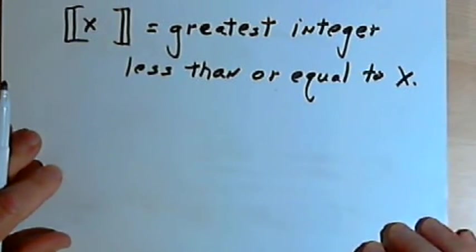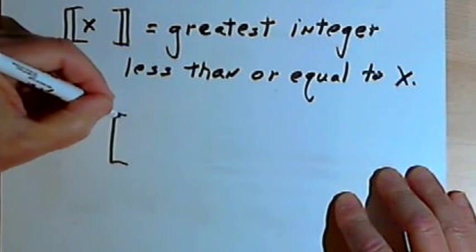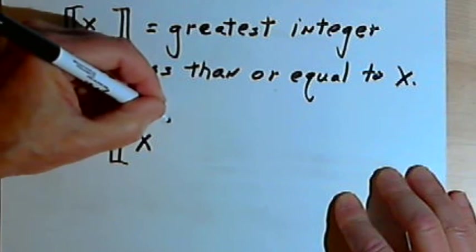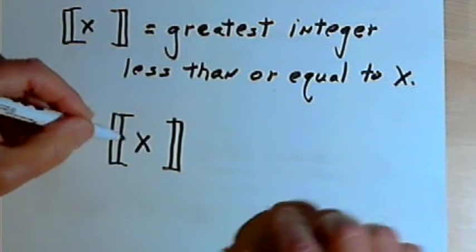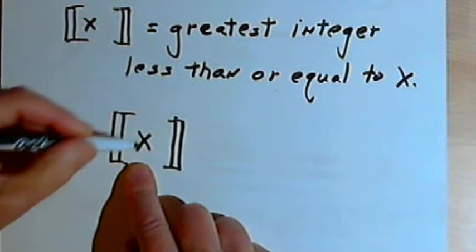Let's start out with the notation and the definition for this. The notation for greatest integer function is a pair of double brackets, extra wide brackets, with either a variable or a number in between them.